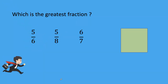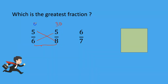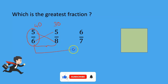Let's see another example. Which is the greatest fraction: 5 by 6, 5 by 8, or 6 by 7? In this case, compare the first two fractions and find the bigger one. Let us cross multiply: 6 fives are 30, and 8 fives are 40. Here we have seen that 5 divided by 6 is bigger than 5 by 8.